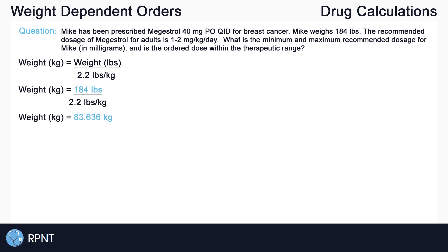It's good to make sure the conversion used at your school or facility is also 2.2, otherwise your answers could be slightly different. If it's not specified in the question, adult weights are generally rounded to the nearest tenth, which rounds our answer to 83.6 kilograms — that will be our patient's weight.